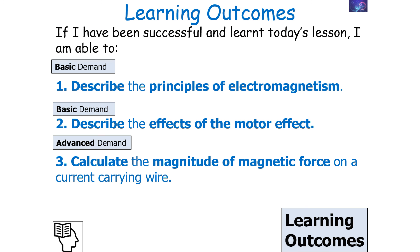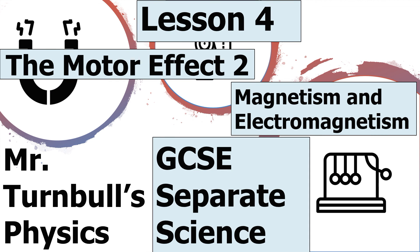If we've been successful in today's lesson, we should be able to describe the principles of electromagnetism, describe the effect of the motor effect, and calculate the magnitude of the magnetic force on a current carrying wire. I hope you've enjoyed today's lesson on the motor effect, which is part of the magnetism and electromagnetism topic in GCSE Separate Science Physics. Thank you very much for listening and have a lovely day.